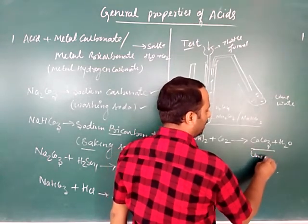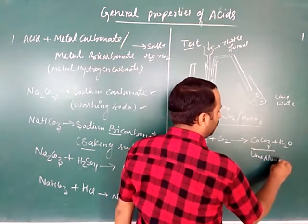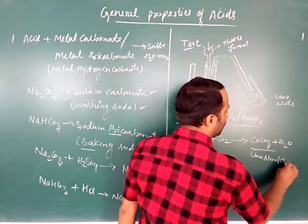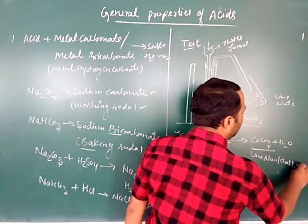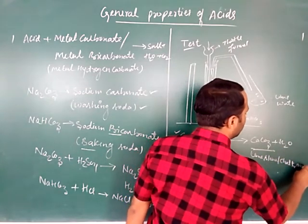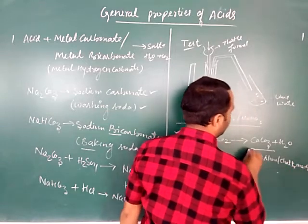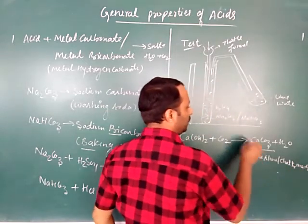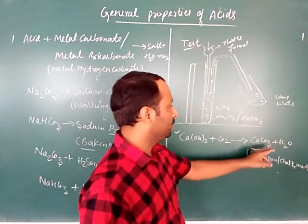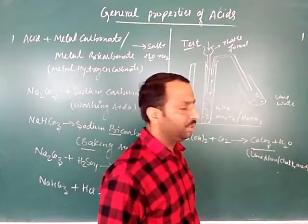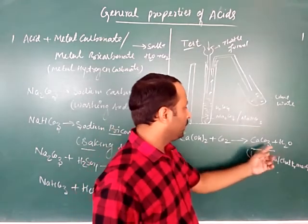The product calcium carbonate is also known as limestone, chalk, and marble. Calcium carbonate is also what egg shells are made of.